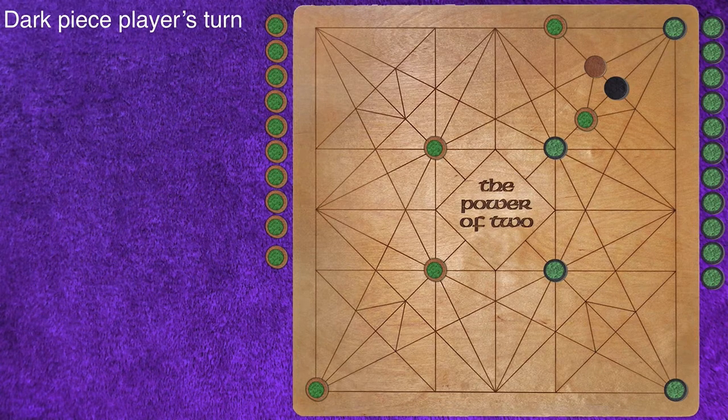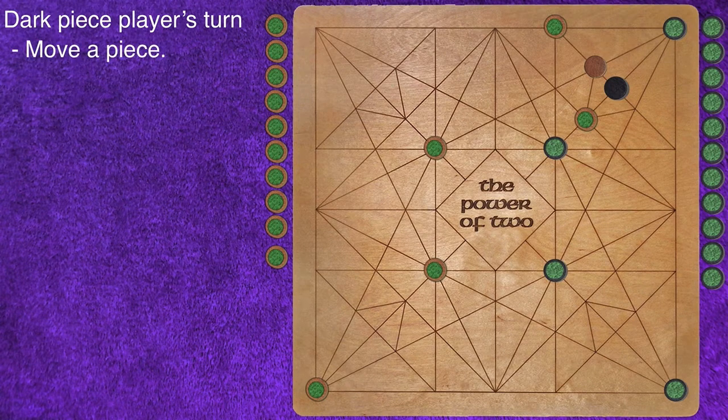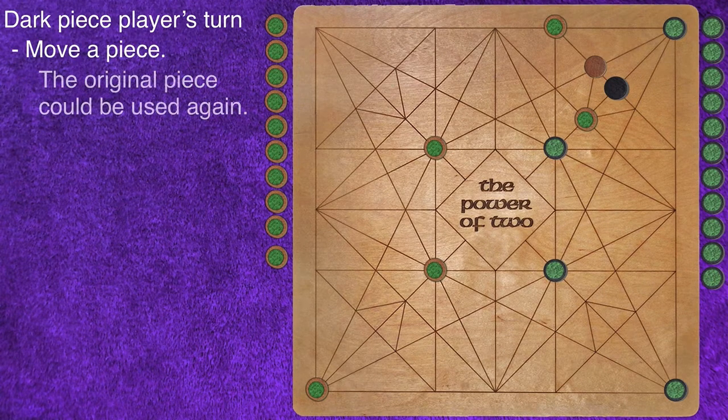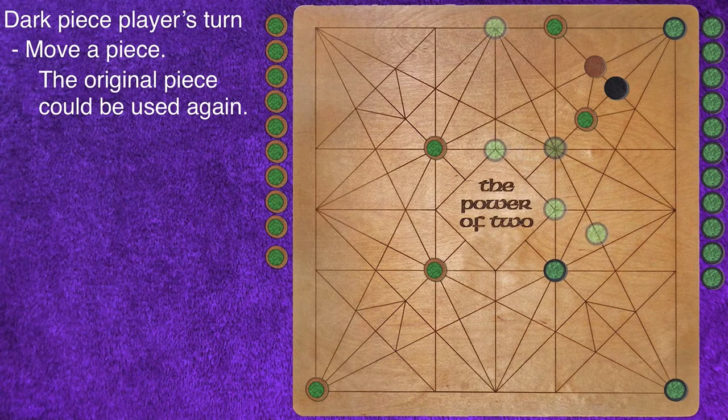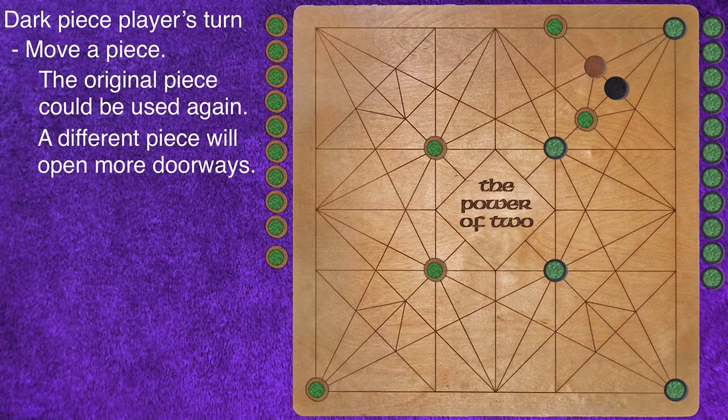It is still the dark piece player's turn. Once again, they begin by moving a piece. The player could have moved the piece used earlier, but each possible move only opens one doorway. By moving a different piece, more doorways will be opened.